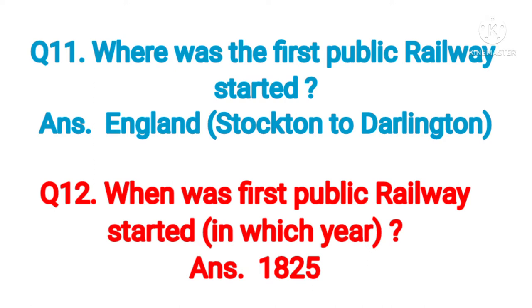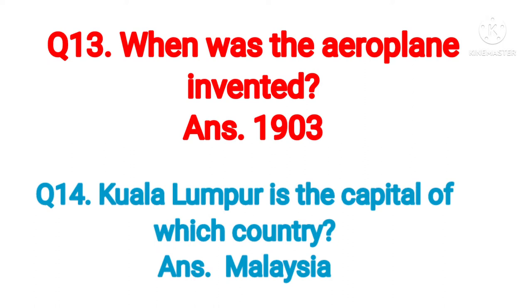Question number eleven: where was the first public railway started? Answer: England, from Stockton to Darlington. Question number twelve: in which year was the first public railway started? Answer: 1825.